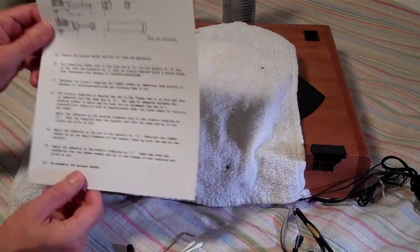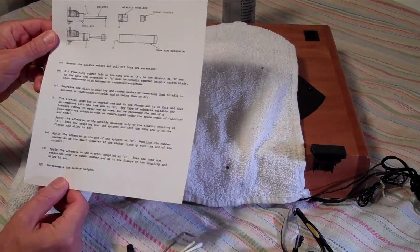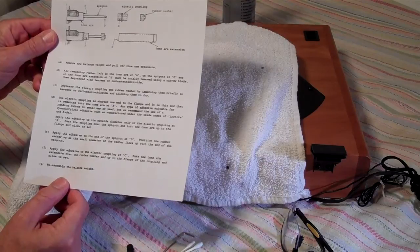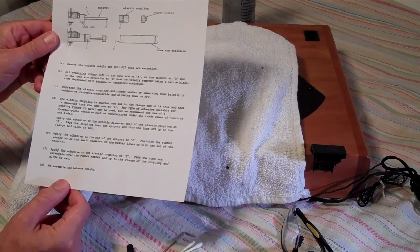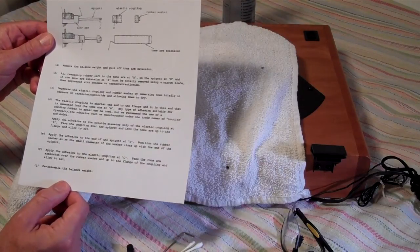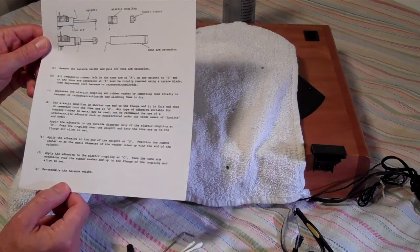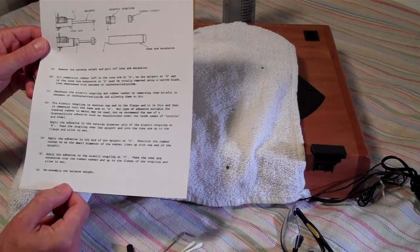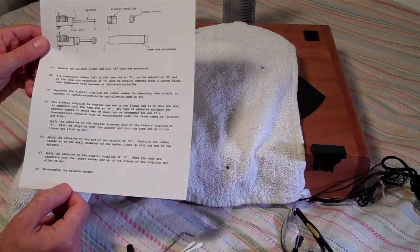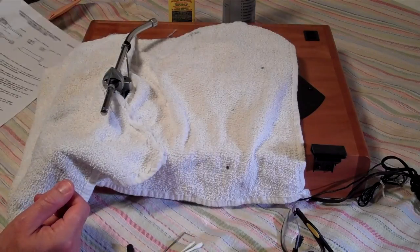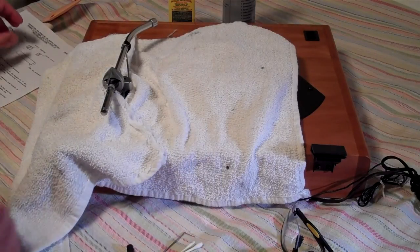Oh, by the way, the service sheet is available on Vinyl Engine. Go to the service manual for the 3009 Series 2, and I believe this was page 34. It's called Service Sheet 25. Very easy to follow directions. What I'm trying to help you with this video is just show some of the tricks that I've learned along the way in doing this.